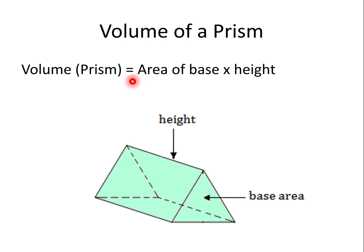Volume. The volume of a prism is the area of the base times the height, which can be written as V equals BH. Sometimes this is seen as the area of the base times the length, in which case is V equals BL.